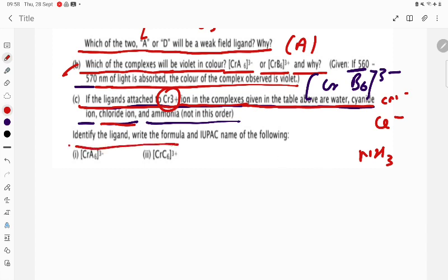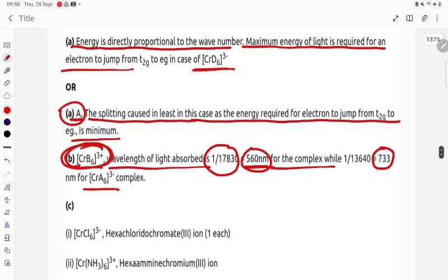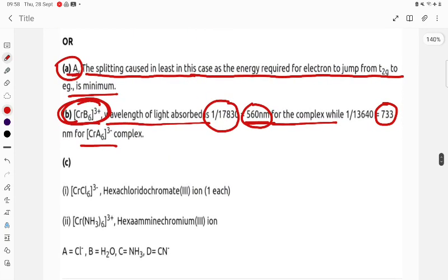Identify the ligand and write the formula. If the ligands attached to Cr³⁺ ion complex given in the table above are water, cyanide, chloride, and ammonia, not in this order. So what the questions are supposed to be? This is C, they are saying. This is continuation.